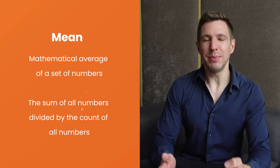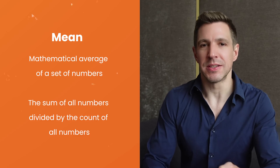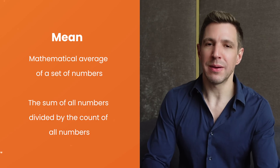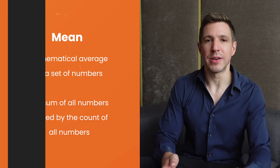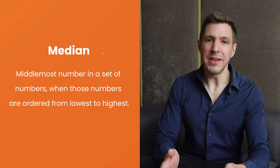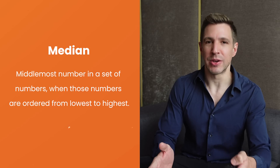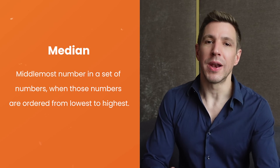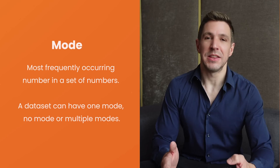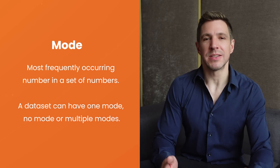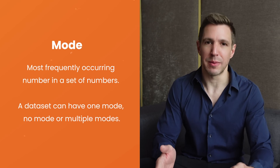The mean is simply the mathematical average of a set of numbers — in other words, the sum of all the numbers in a range divided by the count of all the numbers in that range. The median is the middlemost number in a range of numbers when those numbers are arranged from lowest to highest. Lastly, the mode is simply the most frequently occurring number in a set of numbers.